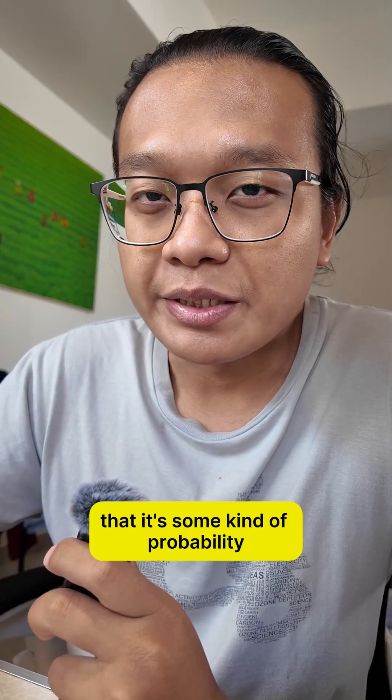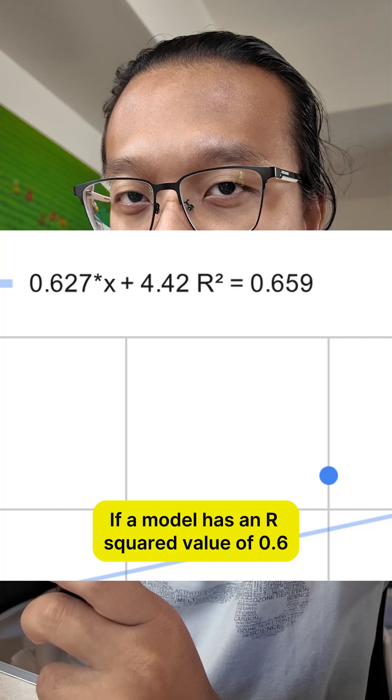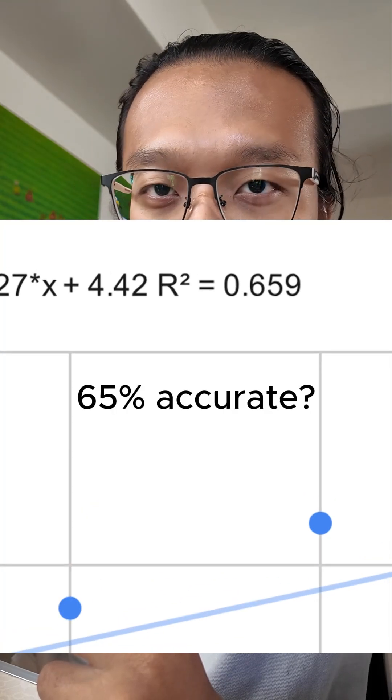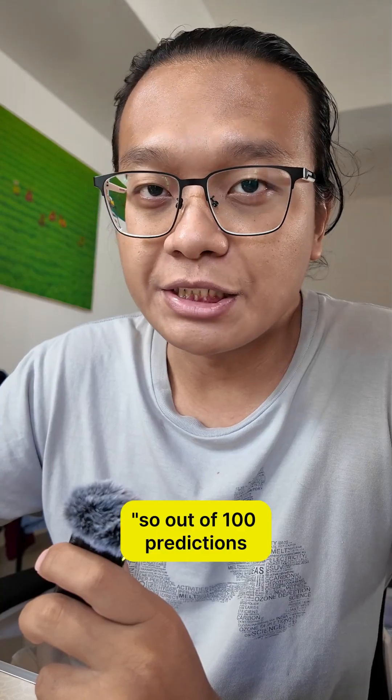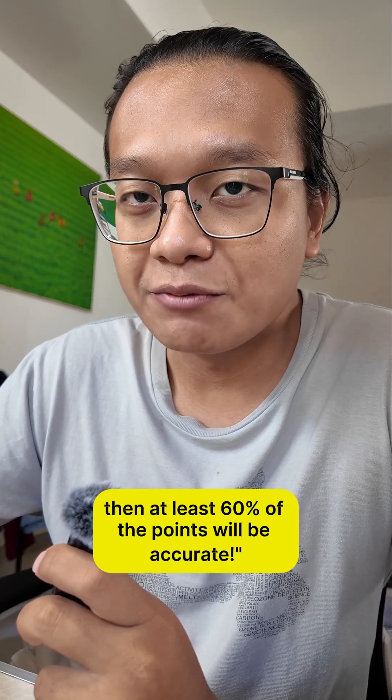Many people think that it's some kind of probability. If a model has an R-squared value of 0.6, they might think the model is 60% accurate, so out of 100 predictions, then at least 60% of the points will be accurate.